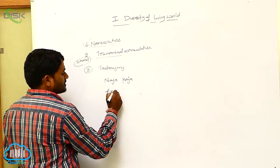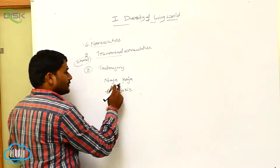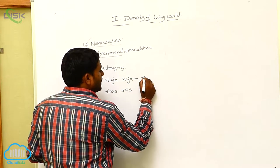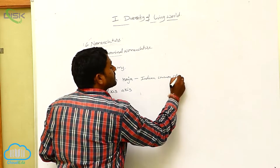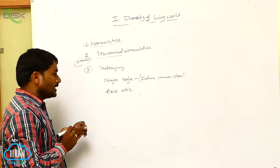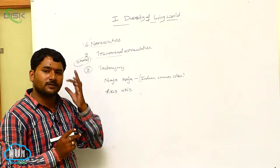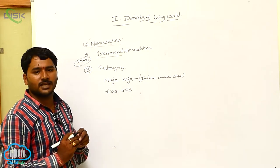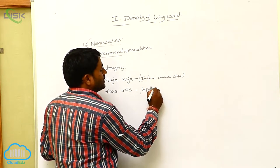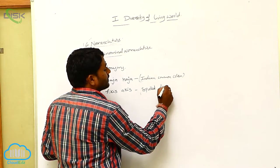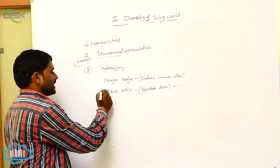Another example is Axis axis. Naja naja is the scientific name of the Indian common cobra — the genus is Naja and the species is also Naja, so both words are the same. That kind of practice is called tautonymy. Axis axis is the scientific name of the spotted deer.